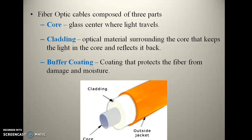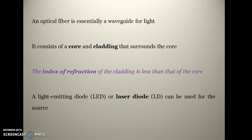The cladding is made up of optical material that surrounds the core and keeps the light inside the core by reflecting it back. Then there is a buffer coating that protects the fiber from damage and moisture.